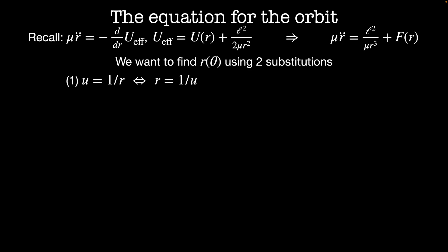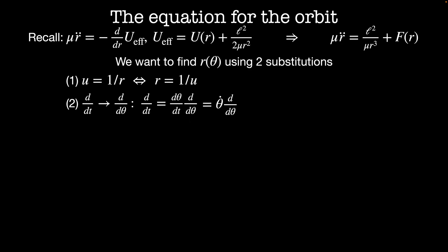The first substitution is a u-substitution, where u equals 1/r, or equivalently r equals 1/u. For the second substitution, we want to change our time derivatives to angular derivatives using the chain rule: d/dt equals d-theta/dt times d/d-theta, or theta-dot times d/d-theta. Since angular momentum is conserved, theta-dot is a constant, and we can rewrite it as the angular momentum divided by mu r squared. Then when we include our first substitution, the time derivative d/dt becomes L u squared over mu times d/d-theta.